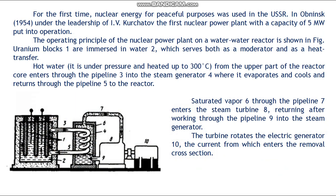For the first time, nuclear energy for peaceful purposes was used in the USSR. In Obninsk, 1954, under the leadership of Kurchatov, the first nuclear power plant with a capacity of 5 megawatts was put into operation.